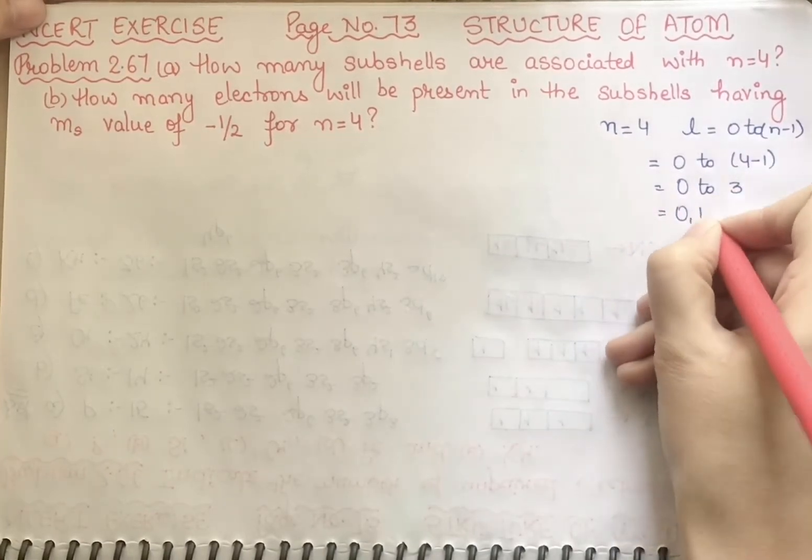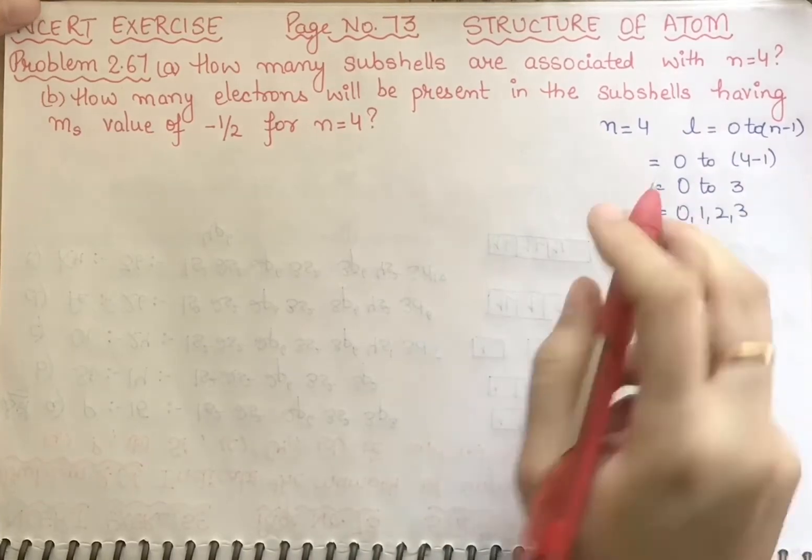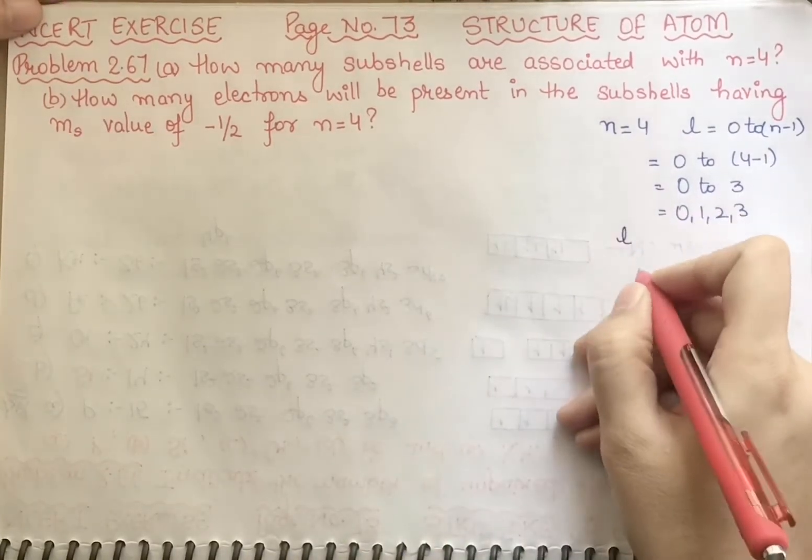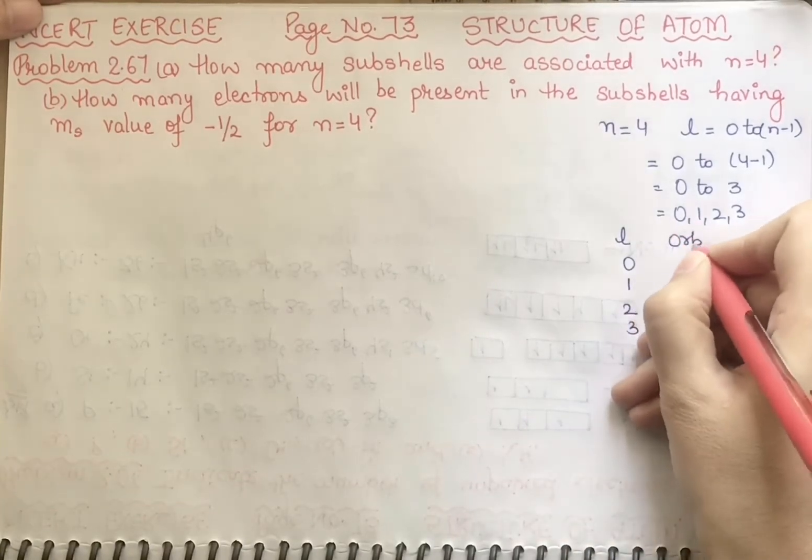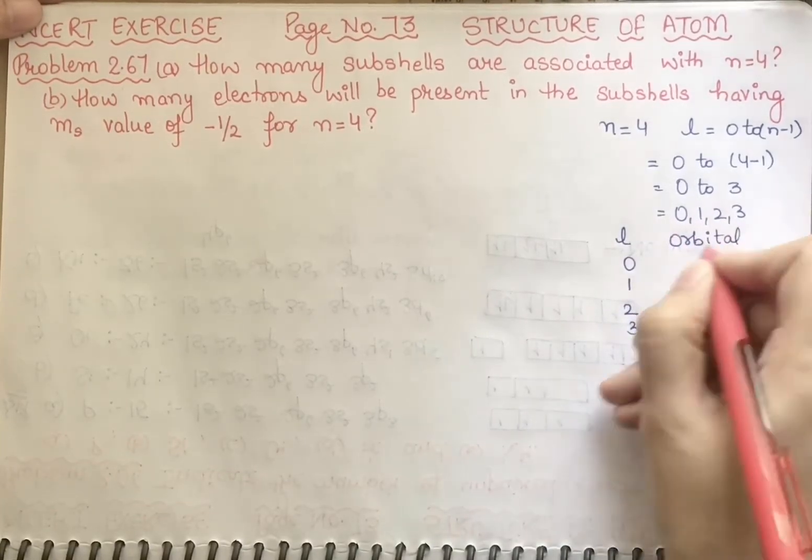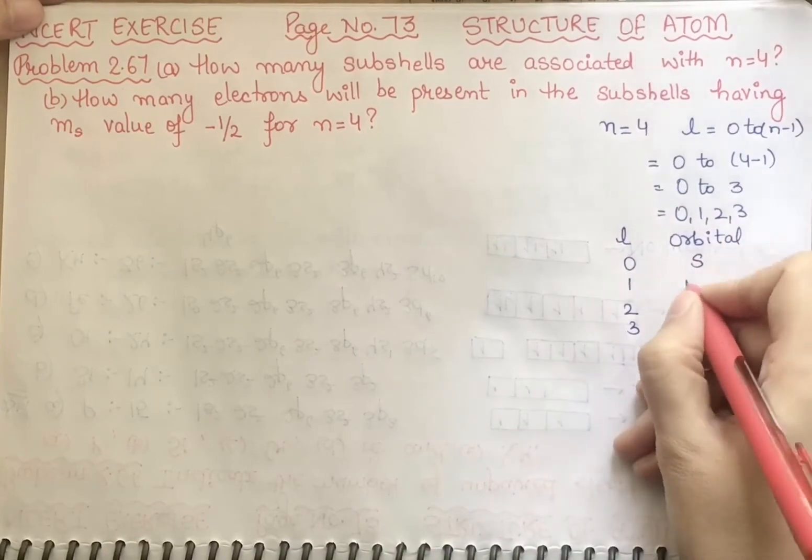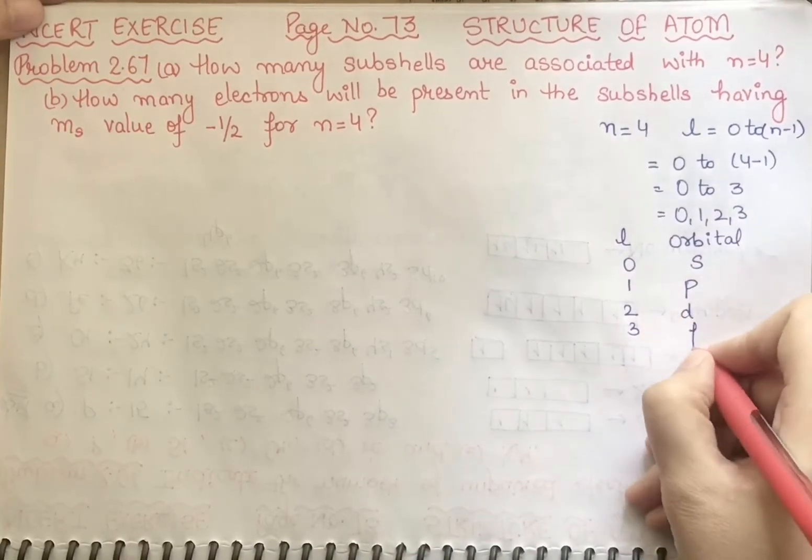Now write 0, 1, 2, 3. Now l, accordingly, if I have l's values given as 0, 1, 2, 3, then which orbital can be equal to this? It will be 0 with respect to s, 1 k p, 2 is d, and last f.